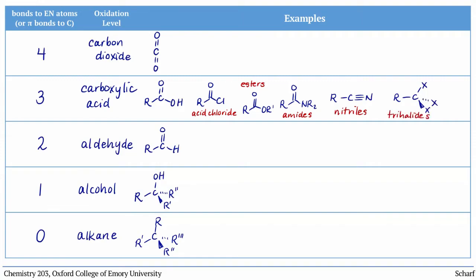The carbon dioxide oxidation level doesn't come up much in most organic chemistry classes, but chloroformates, carbonates, and ureas all fall in this category.